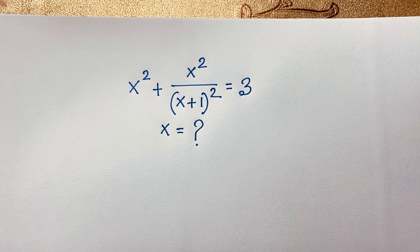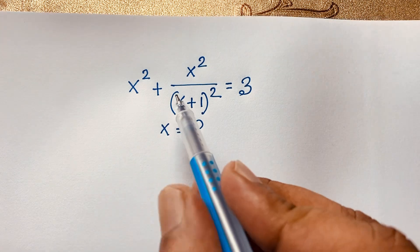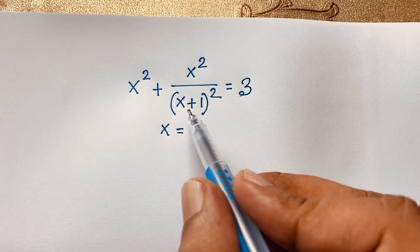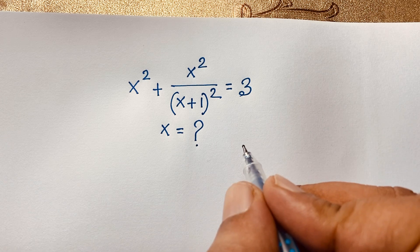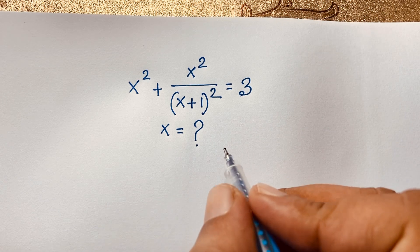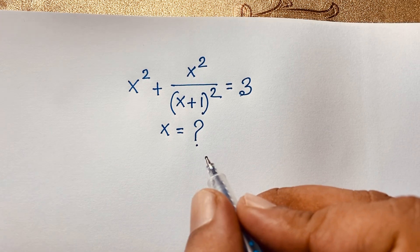Hello everyone, welcome to Russell's Classroom. Today we will solve a Japanese math problem. The question is: x squared plus x squared over (x plus 1) whole to the power 2 is equal to 3. We will find out what x is equal to. How do we solve this interesting math problem?